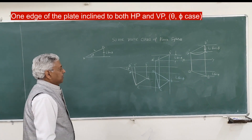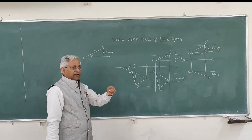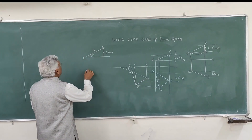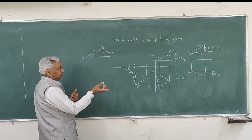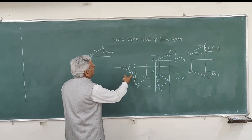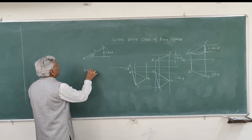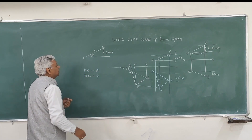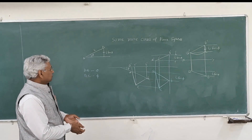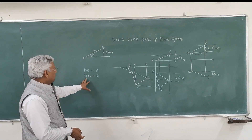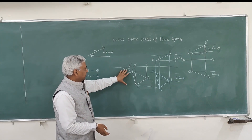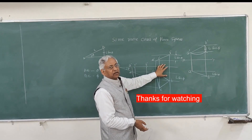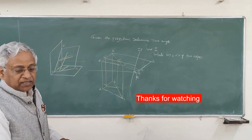That is how you solve the case when one edge is inclined to both planes. You can also solve the case when two edges are inclined — for example, edge AB inclined at theta and edge BC inclined at phi. First satisfy the condition of phi, then in the second step satisfy the condition of theta. Thank you very much.